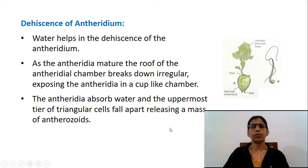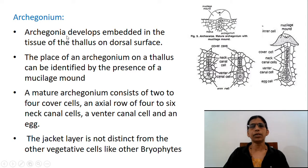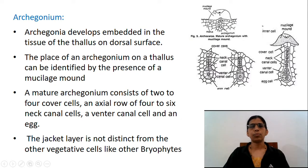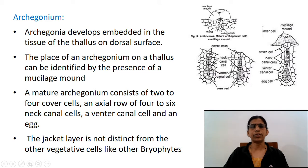The archegonia develop embedded in the tissue of the thallus on the dorsal surface. The place of an archegonium on the thallus can be identified by the presence of a mucilage mound. A mature archegonium consists of 2 to 4 cover cells, an axial row of 4 to 6 neck canal cells, a ventral canal cell, and an egg. The jacket layer is not distinct from other vegetative cells, unlike in other bryophytes.